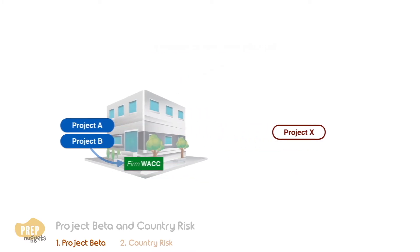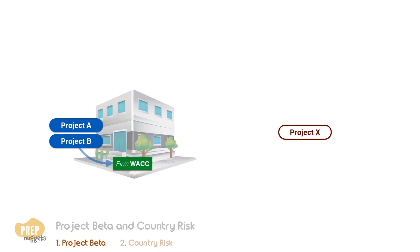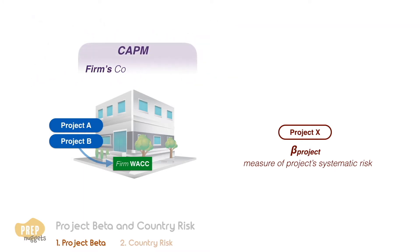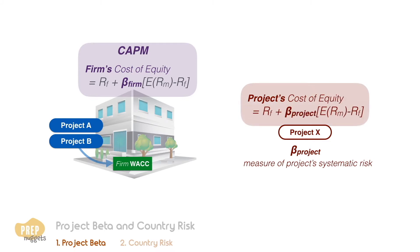One way to factor in the difference in risk level is to estimate the project's beta. A project's beta is a measure of the project's systematic risk on its own. We've learned that under CAPM, we can use a firm's beta to estimate its required return on equity, which is the firm's cost of equity. Likewise, we can use a project's beta to estimate the cost of equity for a specific project.